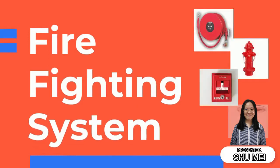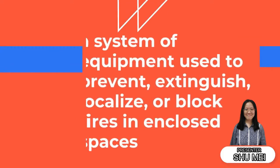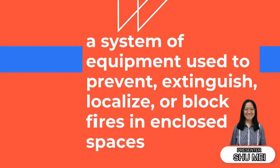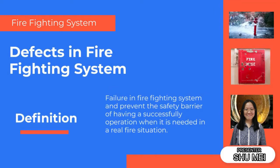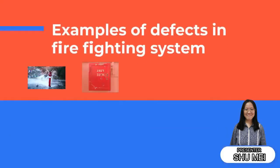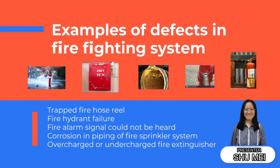A firefighting system is a system of equipment used to prevent, extinguish, block light, or block fires in enclosed spaces. Defects in firefighting systems are failures that prevent the safety barrier from having a successful operation when needed in a real fire situation. Examples of defects include: trapped fire hose reel, fire hydrant failure, fire alarm signal could not be heard, incorrect piping of fire sprinkler systems, and overcharged or undercharged fire extinguisher.